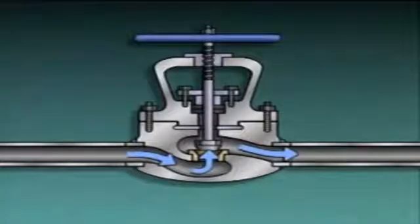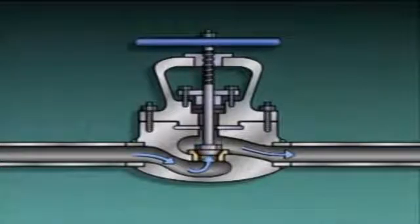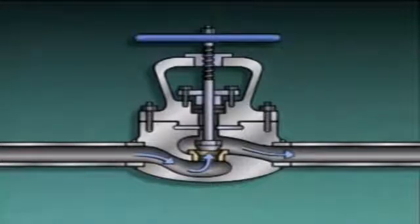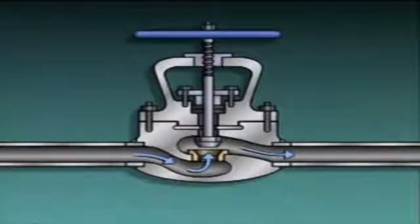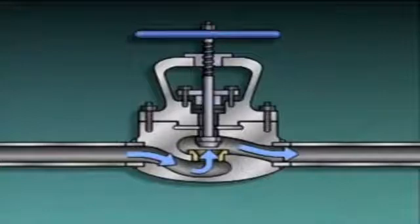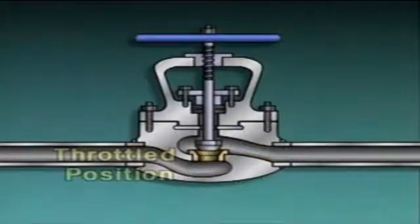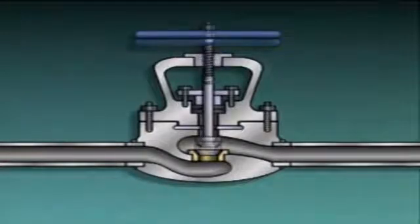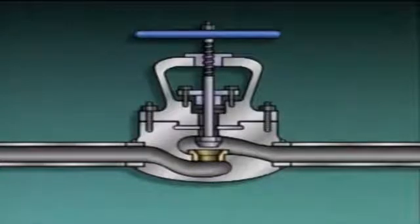As the disc moves toward the seat, flow through the valve is reduced. And when the disc presses against the seat, flow through the valve is stopped. As the disc moves away from the seat, flow through the valve is increased until the disc reaches its limit of travel — at this point, the valve is fully open and maximum flow is passing through. When a valve is partially open, it is said to be in a throttled position. The disc is attached to the stem, which in turn is attached to the hand wheel. As the hand wheel is turned, the stem moves, repositioning the disc with regard to the seat and changing the flow through the valve.